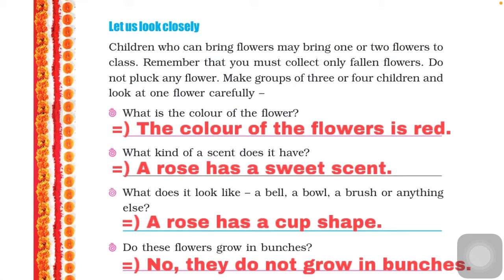The next question is: do these flowers grow in bunches? Bunches means a group of flowers growing together on the same plant. No, they do not grow in bunches. Each red rose petal and all the flowers are growing individually in their own way.